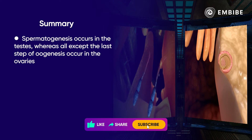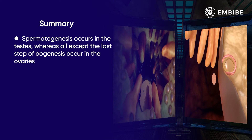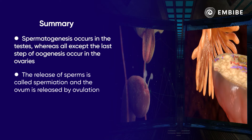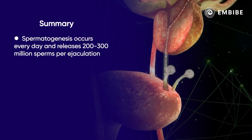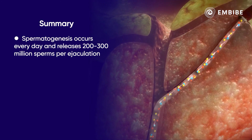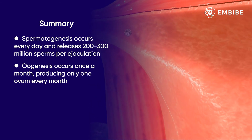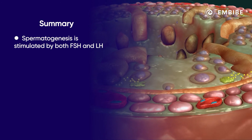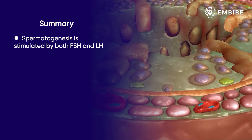Spermatogenesis occurs in the testes, whereas all except the last step of oogenesis occur in the ovaries. The release of sperms is called spermiation, whereas the ovum is released by the process of ovulation. Spermatogenesis occurs every day, releasing 200 to 300 million sperms per ejaculate. Oogenesis takes place only once a month, producing only one ovum every month. Spermatogenesis is stimulated by both follicle-stimulating hormone (FSH) and luteinizing hormone (LH).